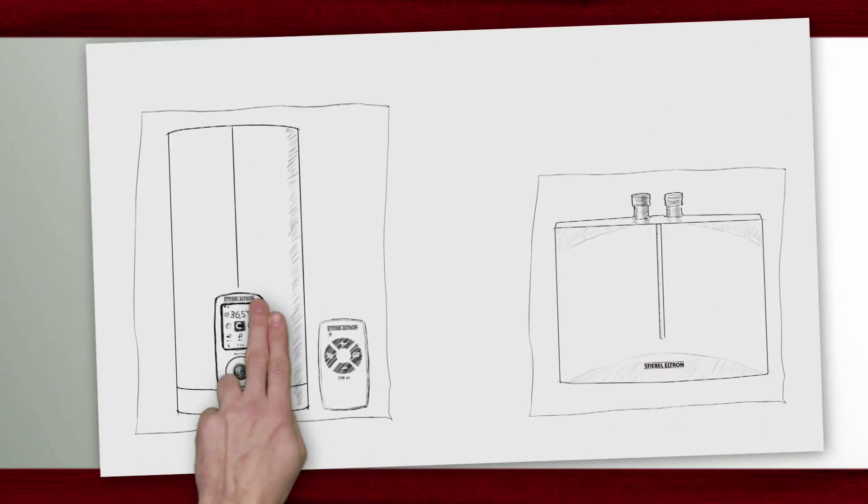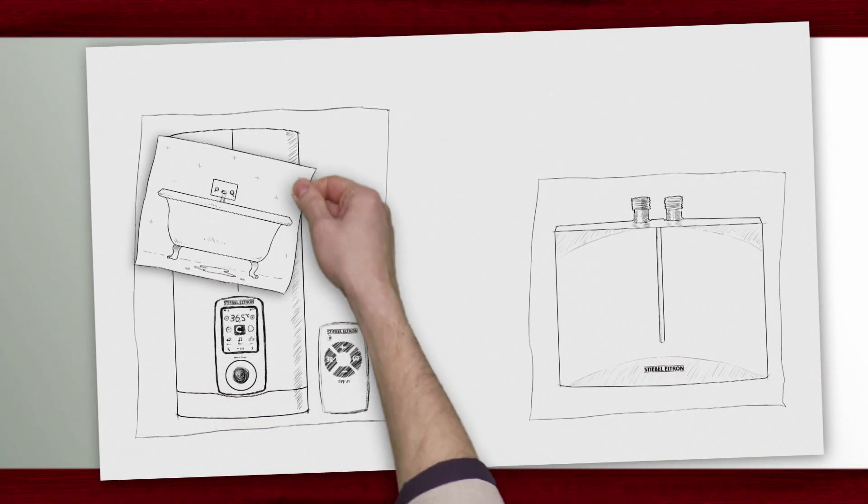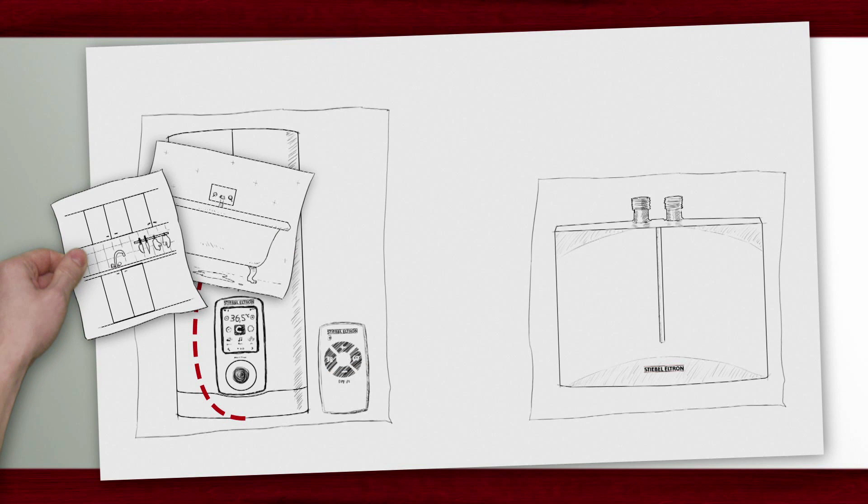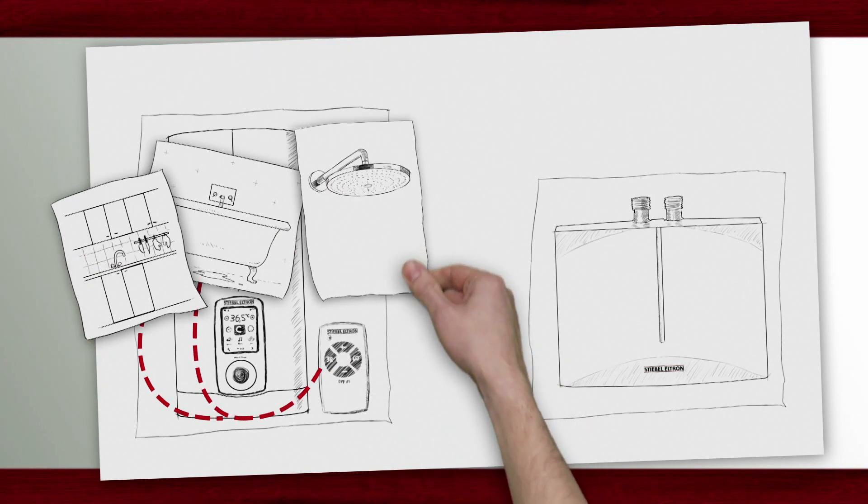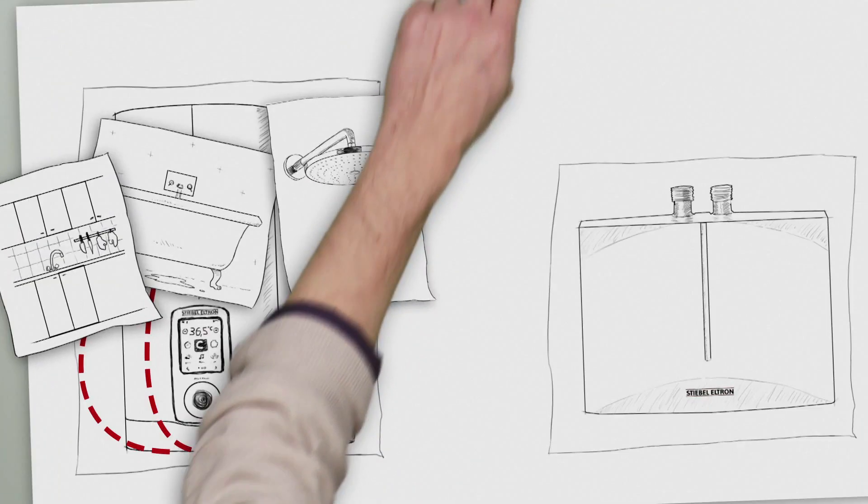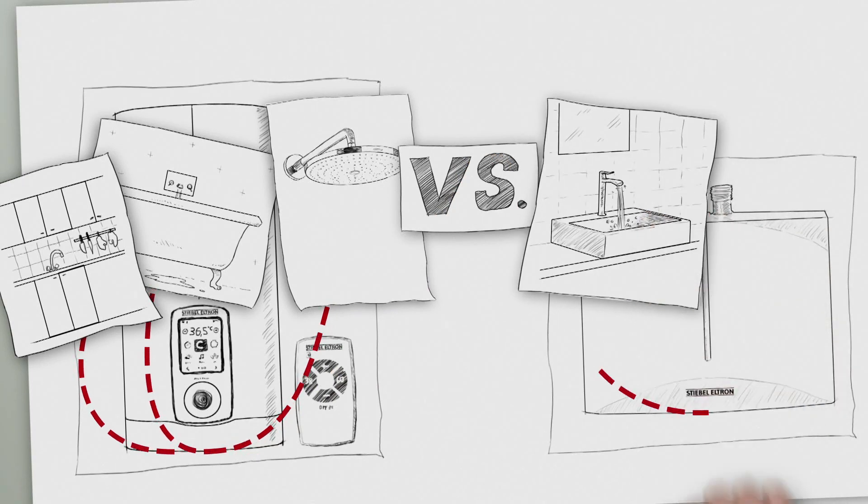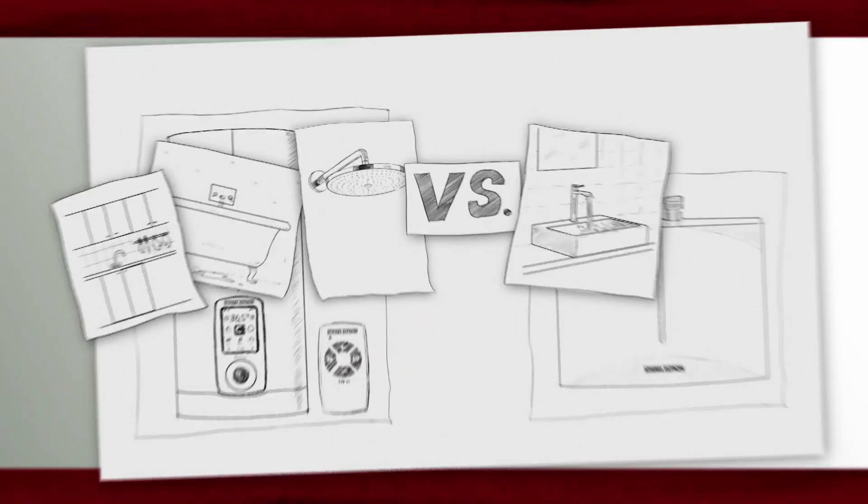For an installation with several draw-off points, we need an appliance suitable for mains pressure. Non-pressurized water heaters, on the other hand, are suitable for a single draw-off point. It's important to select the right kind of tap for the two different systems.